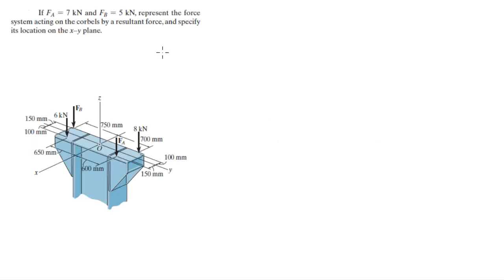For more videos visit ForTheSakeOfEducation.com. Alright guys, let's do this problem where you got a force A of 7 kN, a force B of 5 kN, and you got these other two forces of 6 and 8 acting all onto this assembly. What they want you to do is find the resultant force and find its location in the x and y plane.